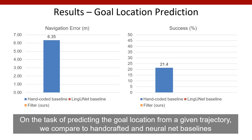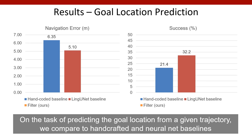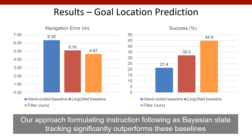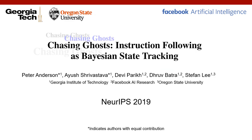On the task of predicting the goal location from a given trajectory, we compare to handcrafted and neural net baselines. Our approach, formulating instruction following as Bayesian state tracking, significantly outperforms these baselines both in terms of lower navigation error and higher success at predicting the goal location. We will release code to replicate all of these experiments.